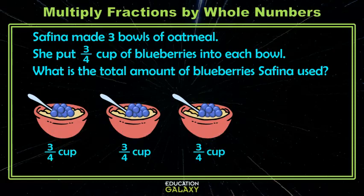Here I have three groups of three-fourths cup. So I can multiply three times three-fourths. And do you remember our trick for multiplying? We're going to leave the denominator, but we're going to multiply our numerator with that whole number. So then we end up with nine-fourths. If you said nine-fourths, you're correct. Safina used nine-fourths cups of blueberries.